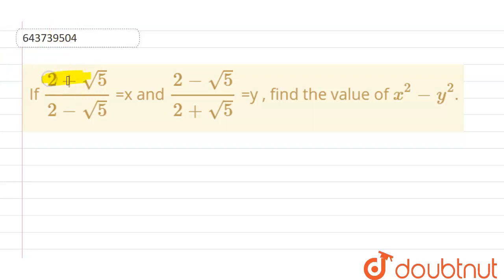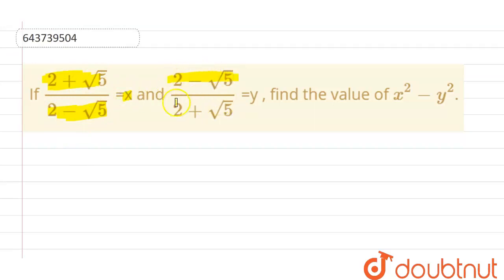We have the question in which the value of x is (2 + √5) divided by (2 - √5), and the value of y is (2 - √5) divided by (2 + √5). We need to calculate the value of x² minus y².